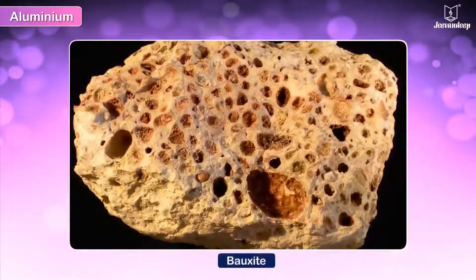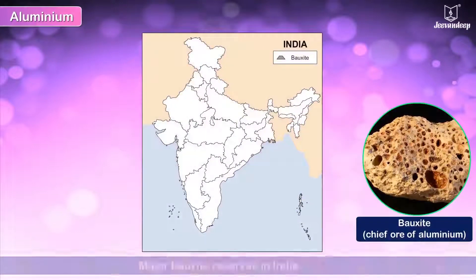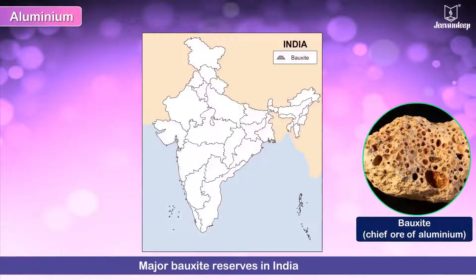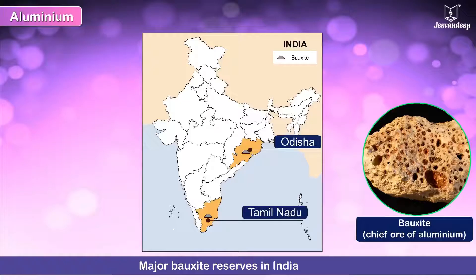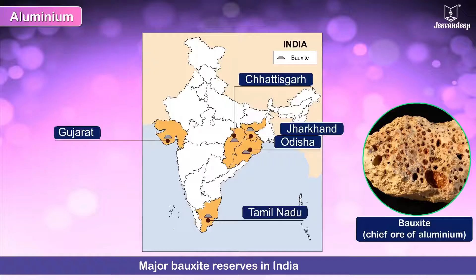Huge deposits of bauxite, the chief ore of aluminium, are found in Odisha, Tamil Nadu, Chhattisgarh, Gujarat, Jharkhand, and Maharashtra.